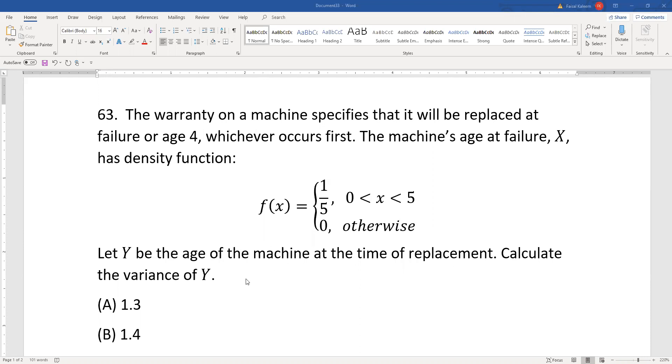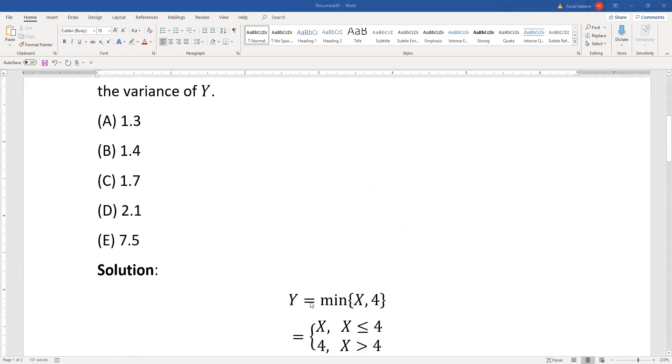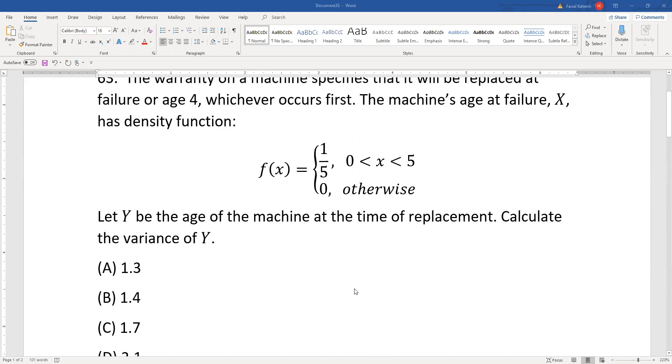Let y be the age of the machine at the time of replacement. I'm going to calculate the variance of y. y will be the minimum of x and 4 because x is the failure time.